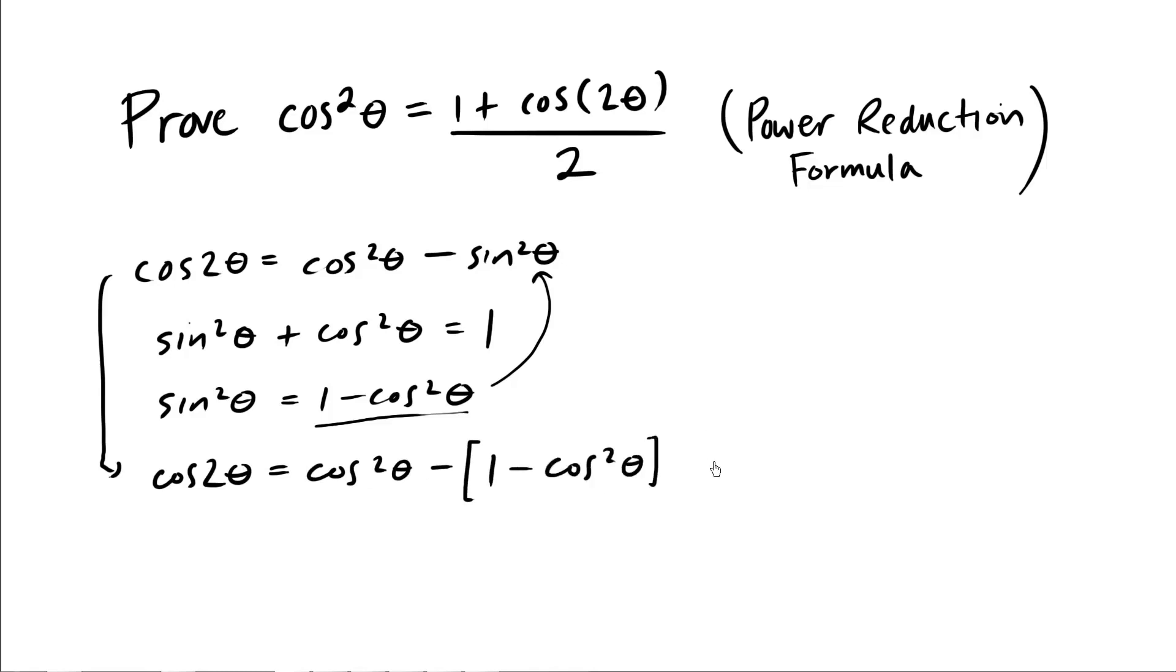And some of you may have already memorized that cosine 2 theta equals 2 cosine squared theta minus 1. So now that we have cosine 2 theta equals 2 cosine squared theta minus 1...